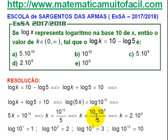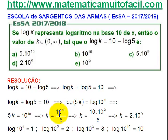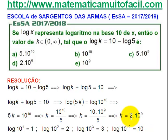Quem escreve 10 à décima está escrevendo 10 que multiplica 10 à nona. Eu podia escrever 10 ao quadrado vezes 10 à oitava e brincar. Mas aqui já me interessa porque eu posso simplificar agora esse 10 com esse 5. Eu não poderia ter simplificado antes, porque aqui é 10 vezes 10 vezes 10 — dez vezes. Eu separei um desses 10, ficaram outros 9. Então, 10 por 5 dá 2, e o meu K vai dar 2 vezes 10 elevado à nona.